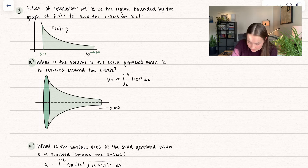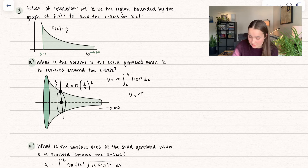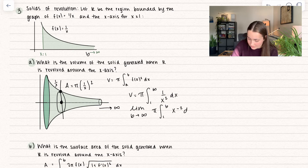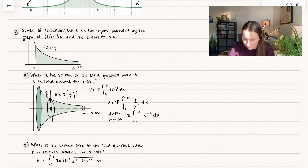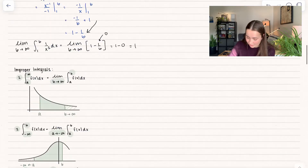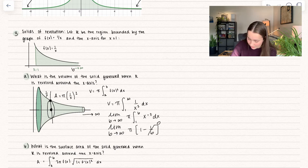If we took a slice, this would look like a circle, and we can find the area of that circle, which is pi times the radius squared. The radius goes from the center up to our function 1 over x, so we get 1 over x squared. We're adding up all of those areas from 1 to infinity of our function squared, which is 1 over x squared dx. Rewriting it properly, we take the limit as b approaches infinity of pi times the integral from 1 to b of x to the negative 2 dx. We already evaluated this integral — it equals 1 minus 1 over b. As b approaches infinity, 1 over b goes to 0, so this is just equal to pi.